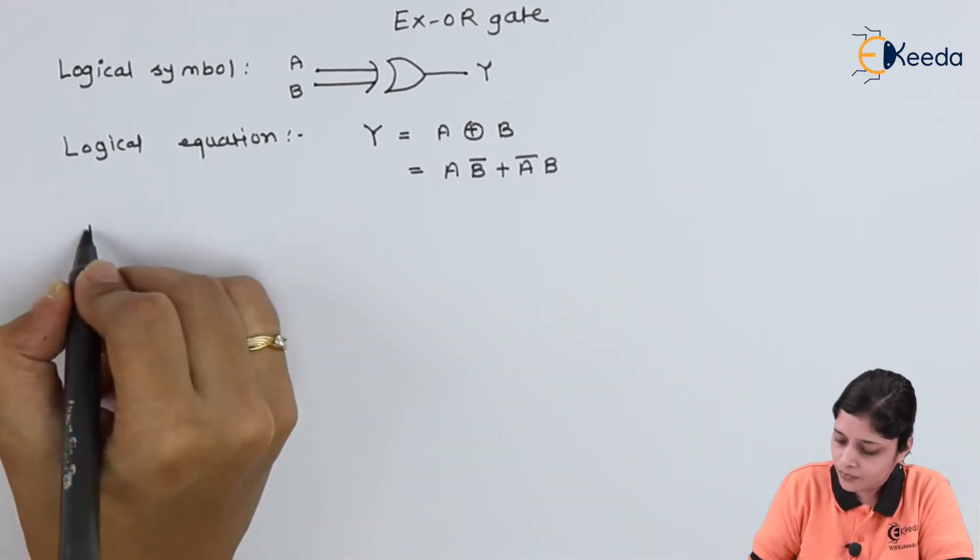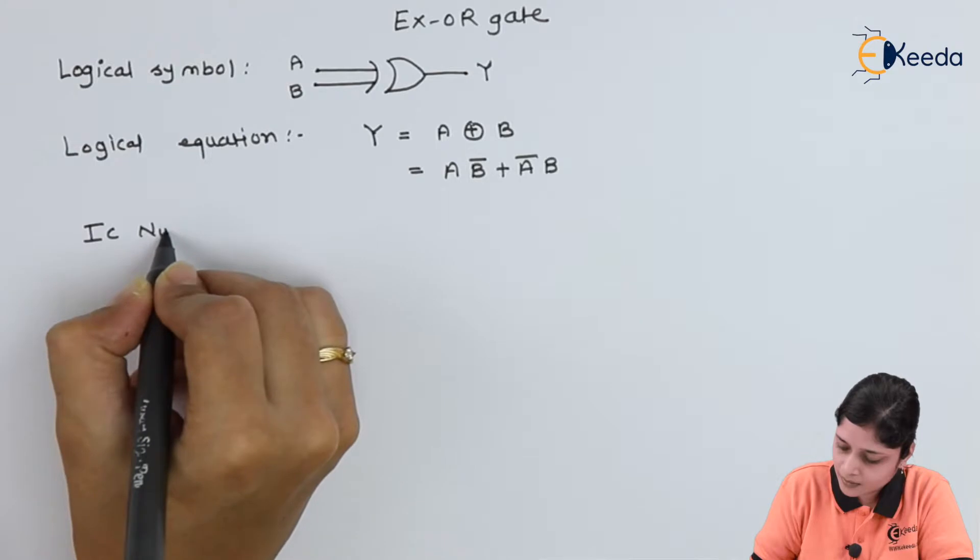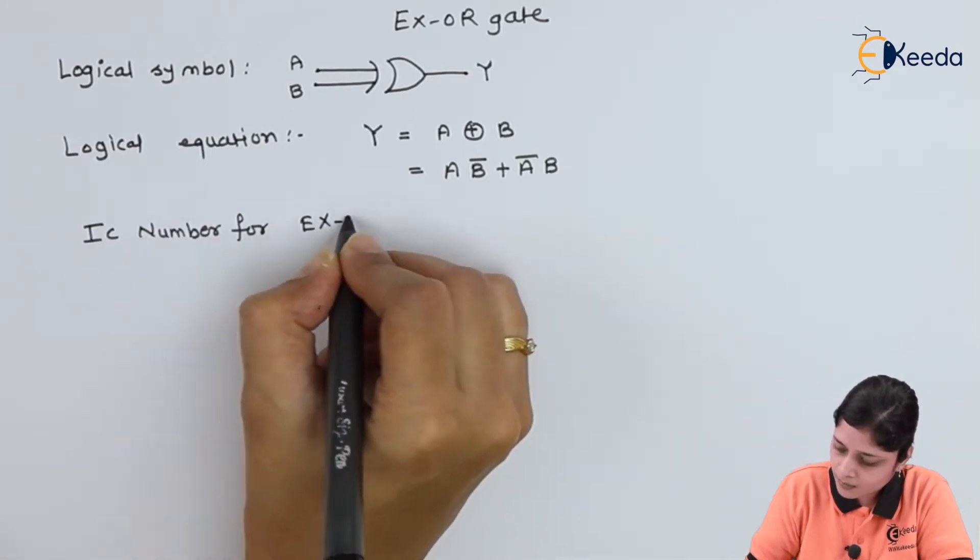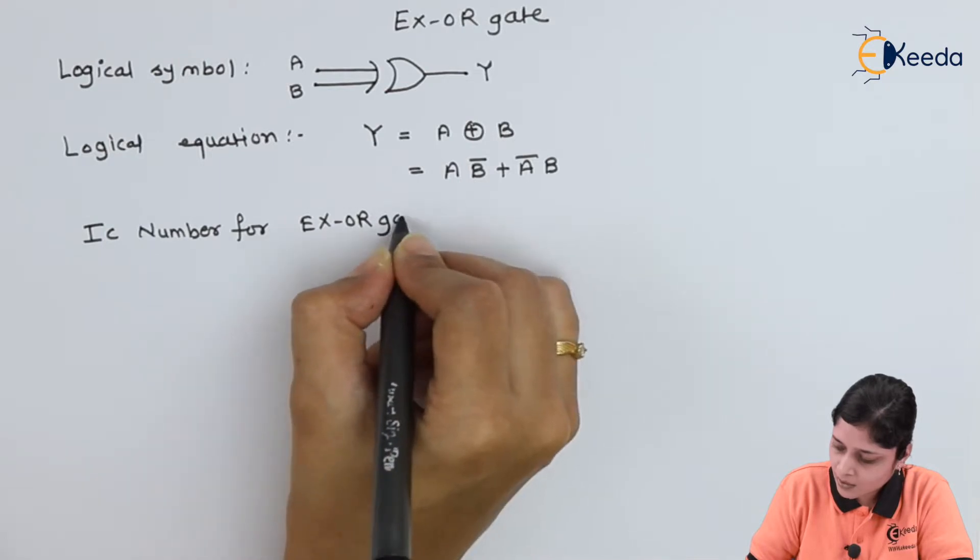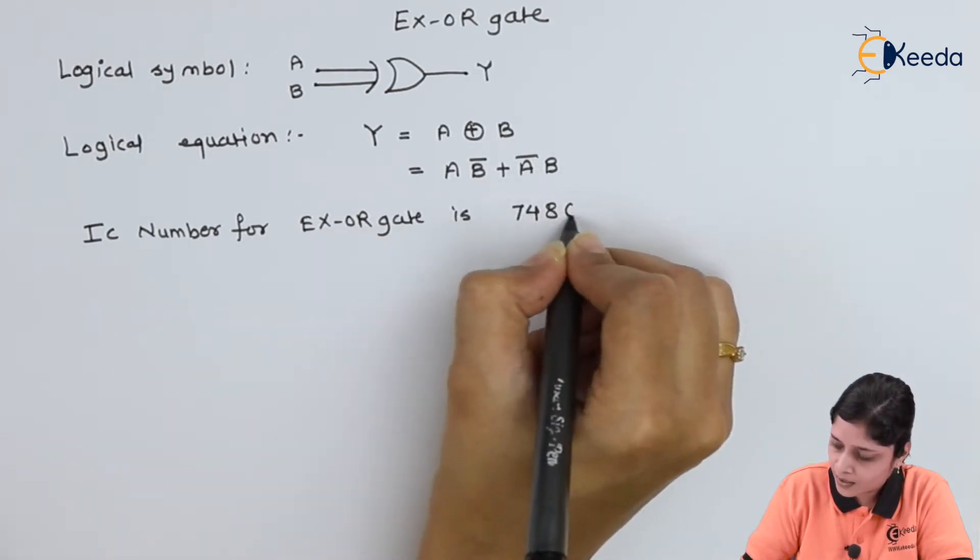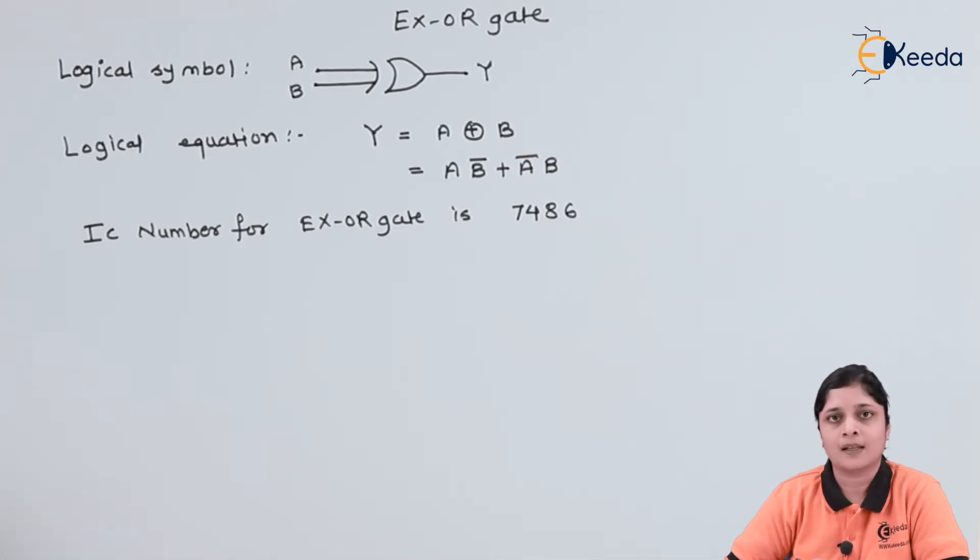IC number for XOR gate is 7486. It is also used for the practical purposes and according to the application it will give its output.